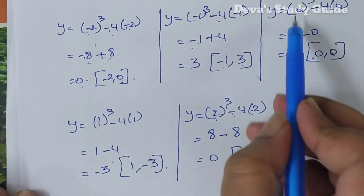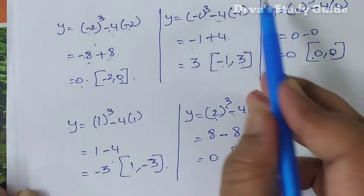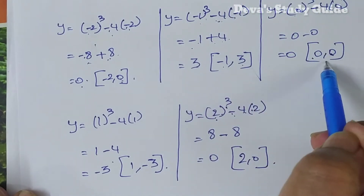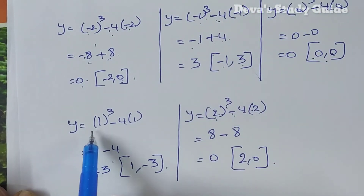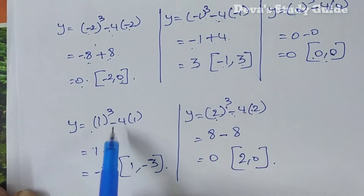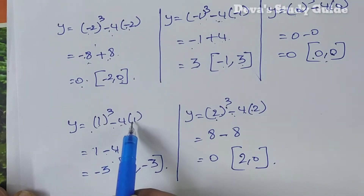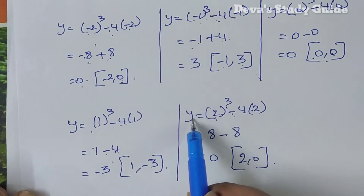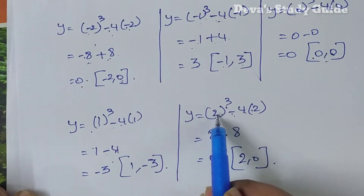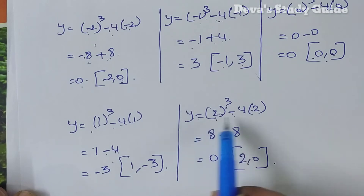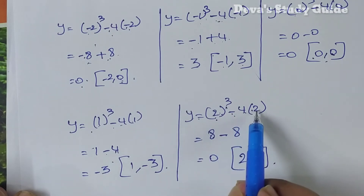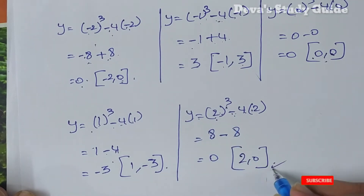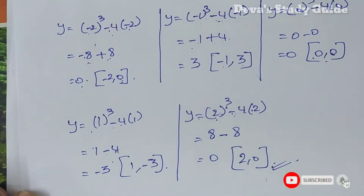For x equals 0: 0 cube is 0, 0 into anything is 0, so y equals 0. For x equals 1: one cube minus 4 into 1 equals 1 minus 4 equals minus 3. For x equals 2: 2 cube is 8, minus 4 into 2 is 8, so y equals 0. The values are complete.